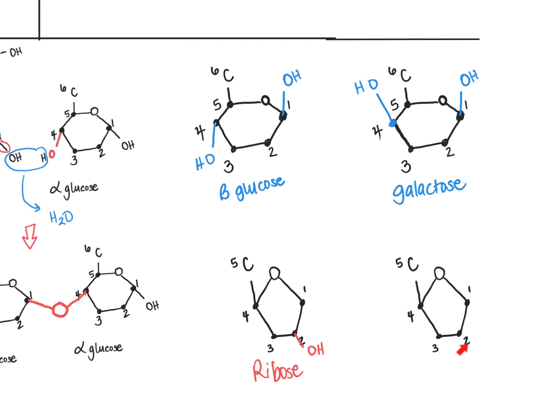If the five carbon sugar you are looking at does not have that hydroxyl group - here we've removed the oxygen and OH group, so we've removed that hydroxyl group - this is called deoxyribose,